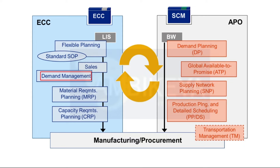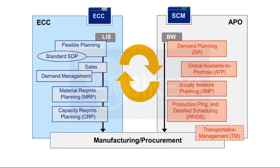Actual demand management takes place in ECC. However, planned independent requirements can also be derived from APO DP. Sales orders are always created in the ECC system. A global ATP check of the sales order can be performed in APO, and this can also be integrated with PP/DS.